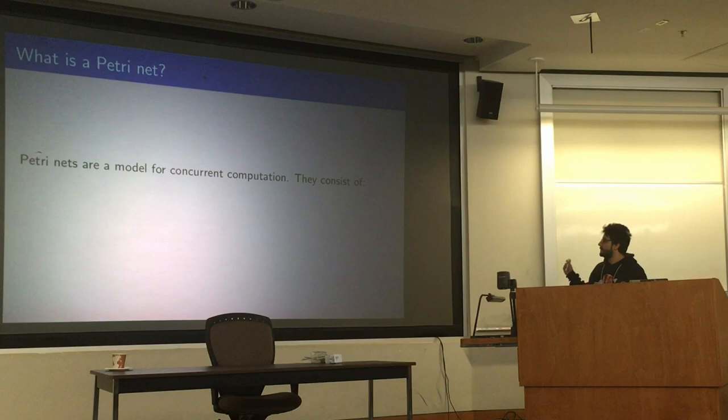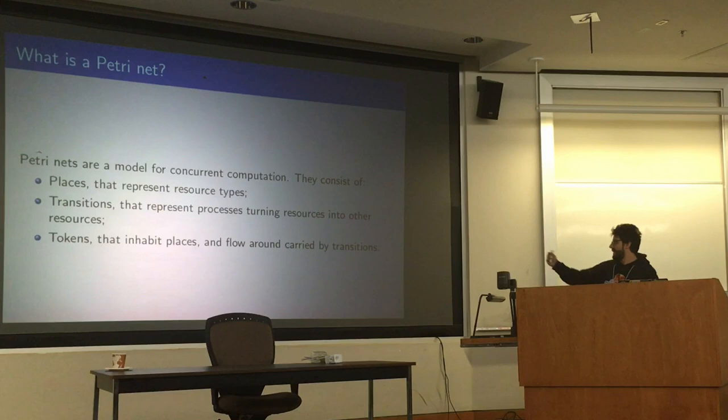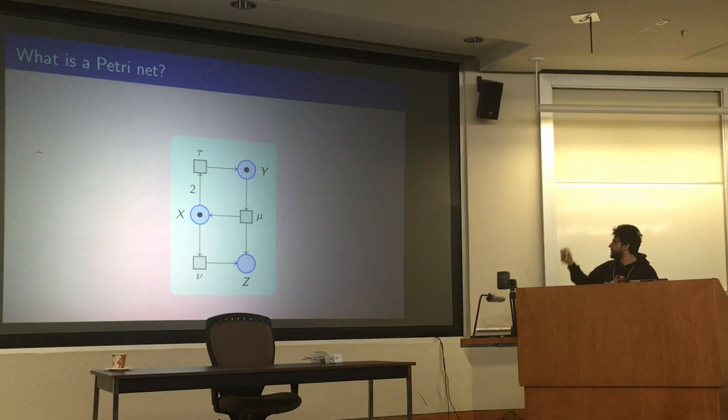So what is a Petri net? A Petri net is a model for concurrent computation that consists of places that represent resource types, transitions that are processes that consume resources and spit out other resources, and tokens that inhabit places and are the things that flow around processed by transitions.